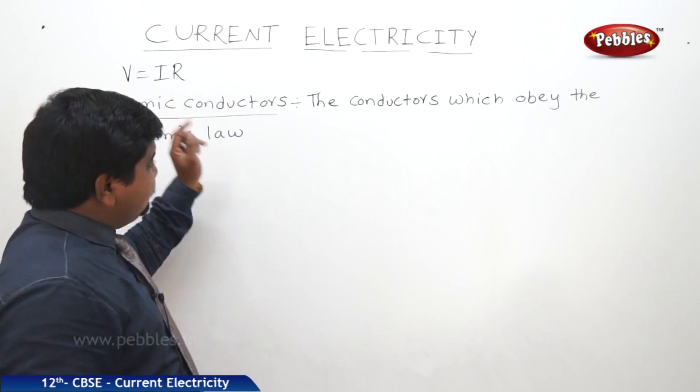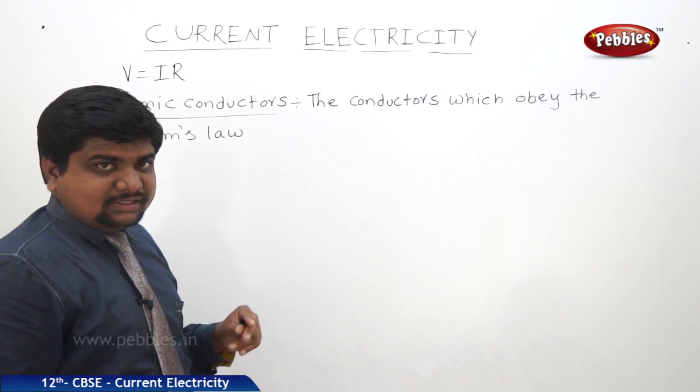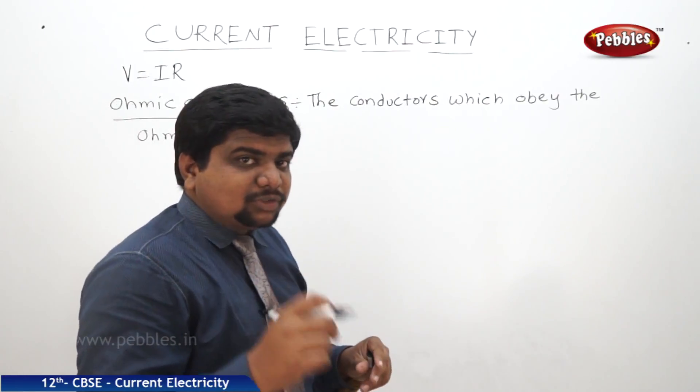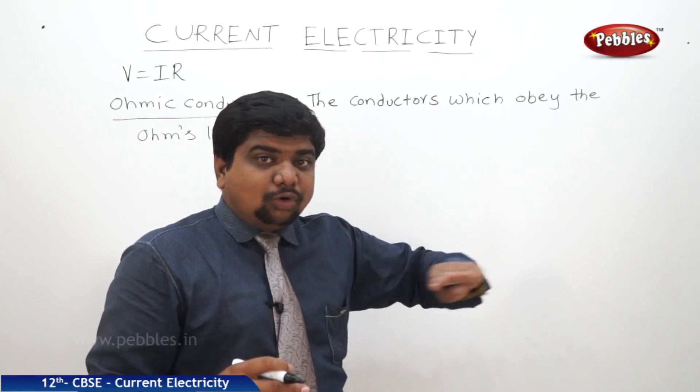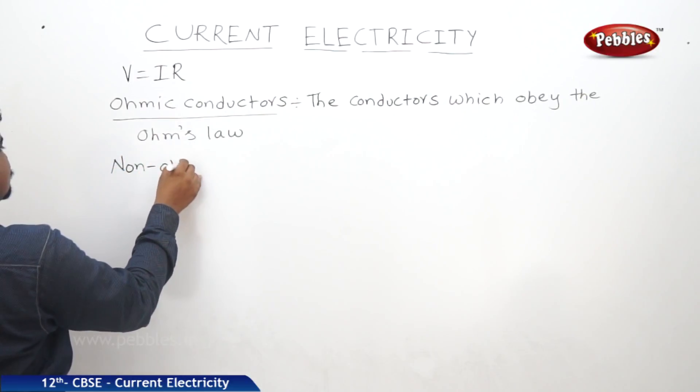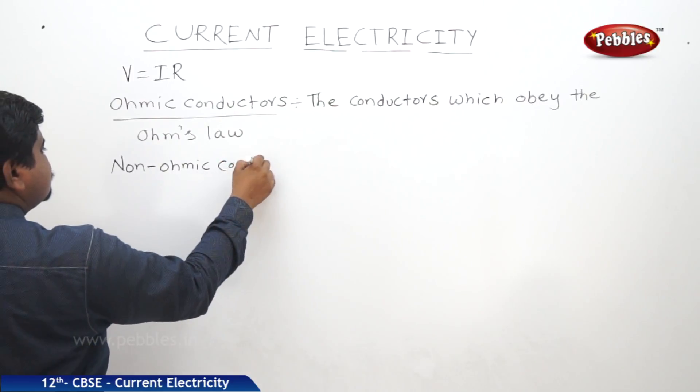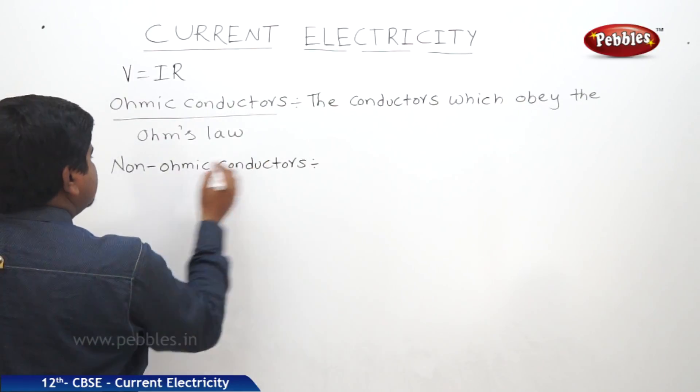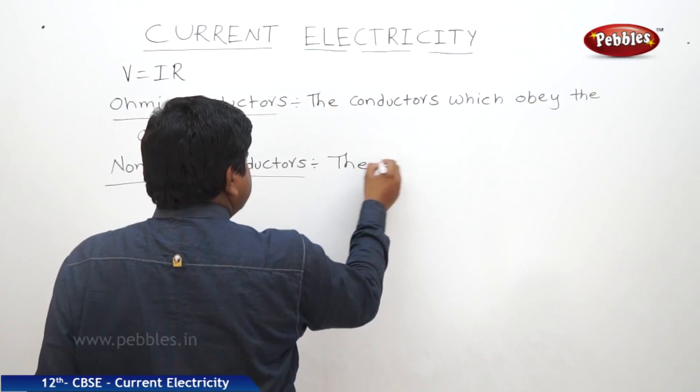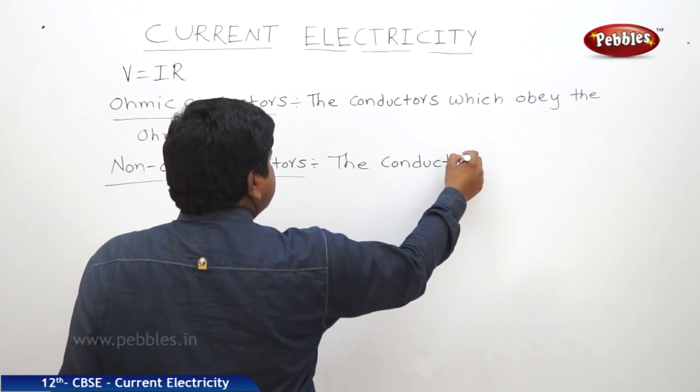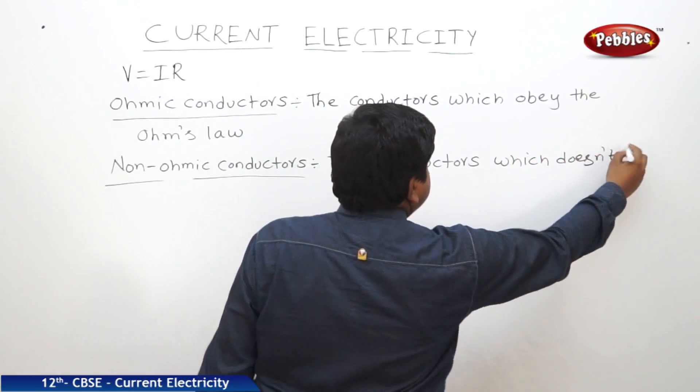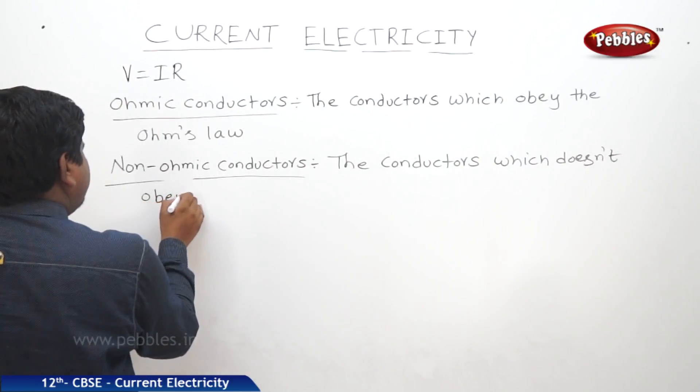If this is not possible, then we cannot say these are Ohmic conductors. But some conductors which don't obey the Ohm's law means in those conductors V is not proportional to I, and V by I ratio won't be constant throughout the operation of the electricity. Those conductors are called as non-Ohmic conductors. Non-Ohmic means the conductors which don't obey the Ohm's law.